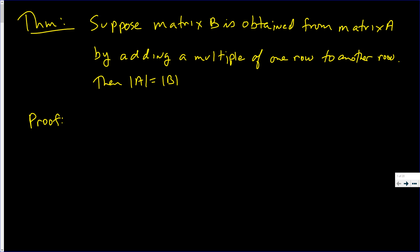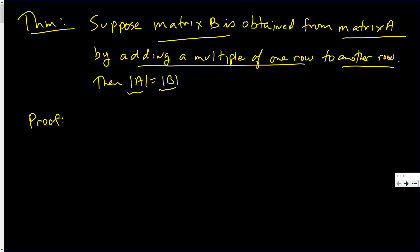Let's prove a nice theorem. Suppose that you have a matrix B and it comes from matrix A by adding a multiple of one row of A to another row of A. I claim that the determinants of these two matrices are in fact the same. Proof.